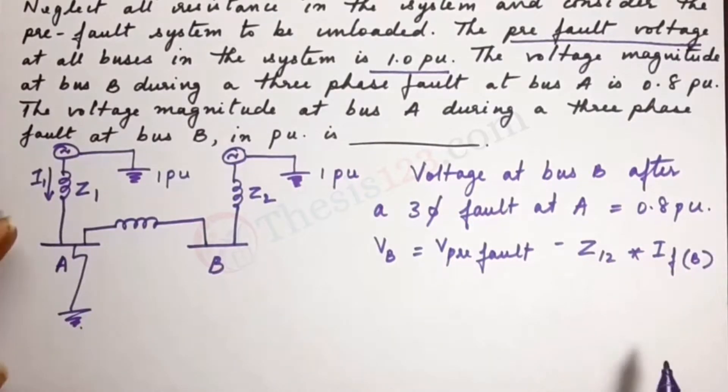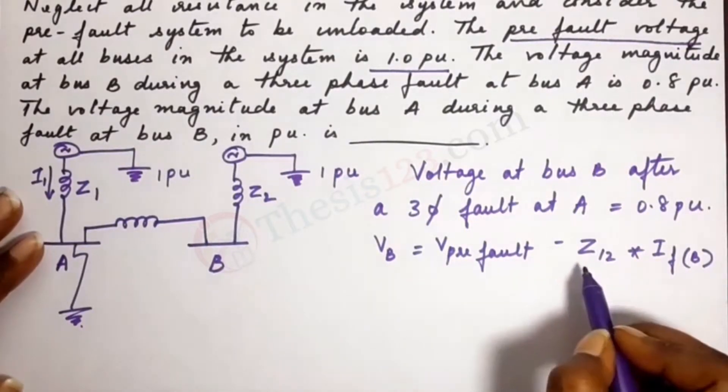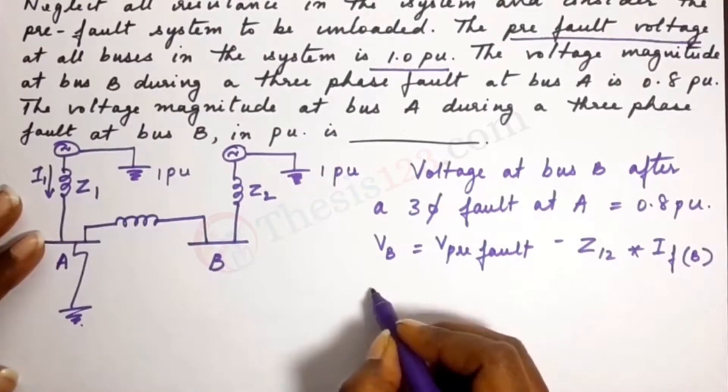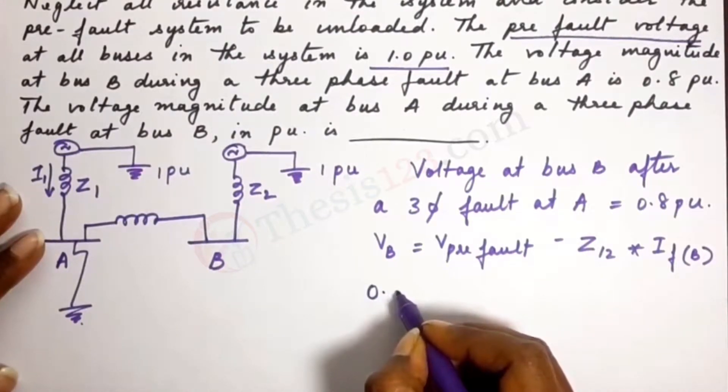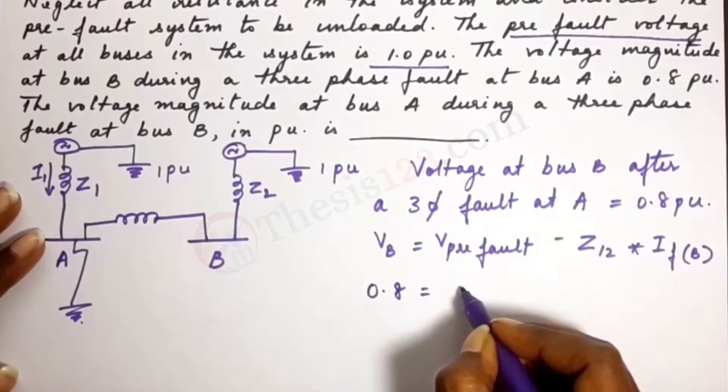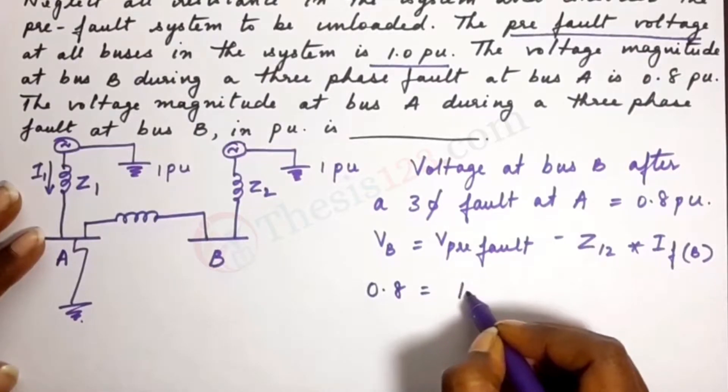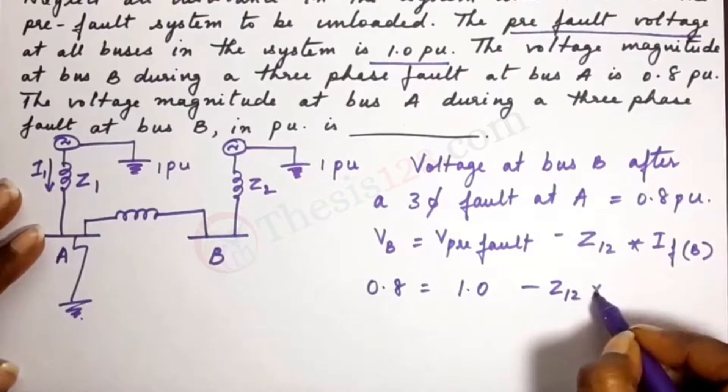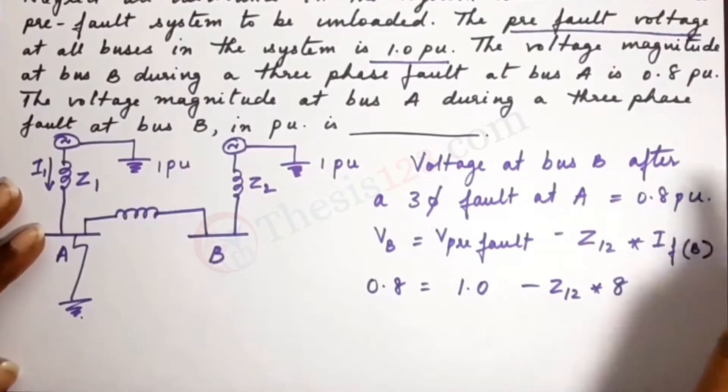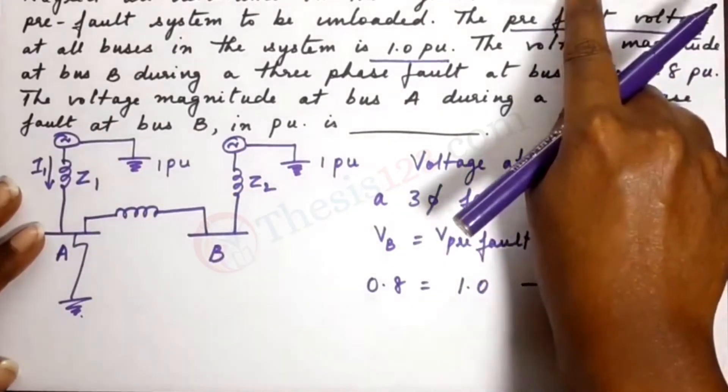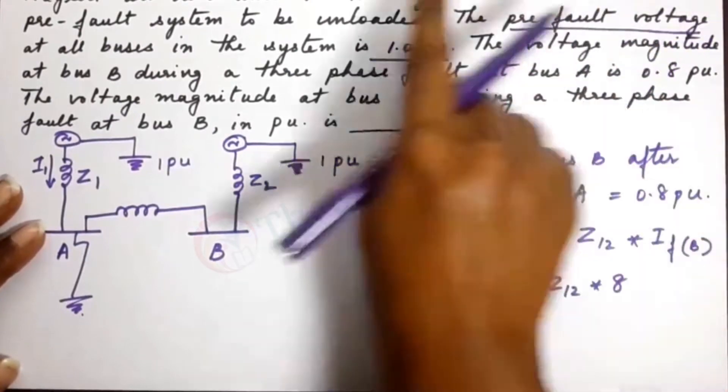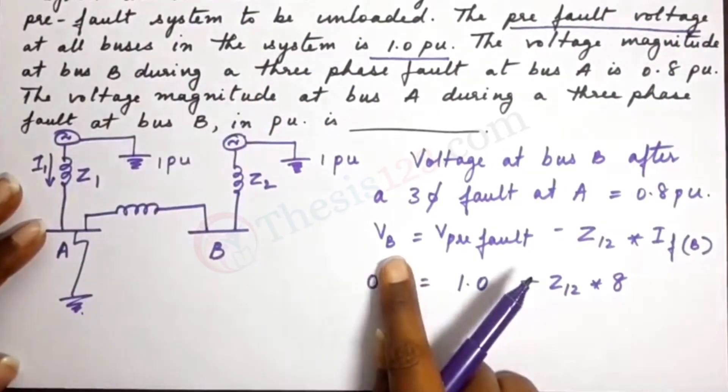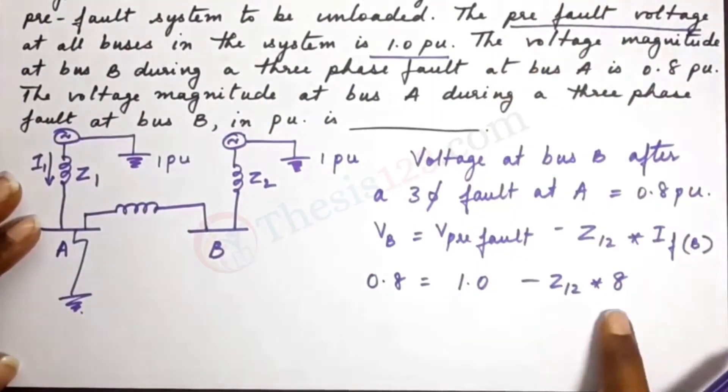Now we need to find out what is the value of this mutual impedance Z12. So we plug the values in: VB is 0.8, pre-fault voltage is given to us as 1.0 minus Z12 times 8. That's the fault current given to us at B. We are finding out for B, therefore we need the value at B.